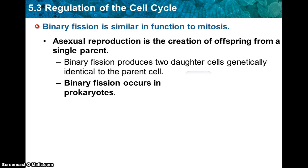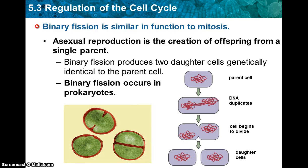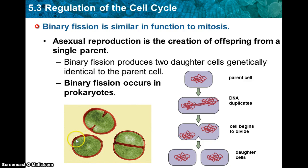Binary fission occurs in prokaryotes — that means bacteria. The process is the same as mitosis and includes cytokinesis. The major difference is the DNA: DNA in prokaryotes is circular, whereas in eukaryotes like us it's linear, so the way the DNA replicates is a little bit different.